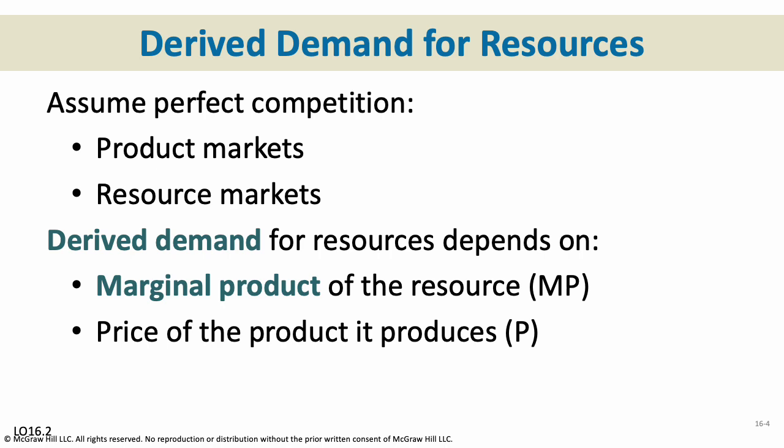The derived demand for resources depends on two things: what's the marginal product of that resource — what are they making — and what is the price of the product that those resources are producing? Those two factors determine the demand for resources.